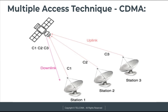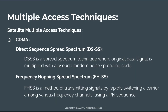This diagram shows three stations using different codes — C1, C2, and C3 — to communicate with the satellite transponder. On the downlink carrier, these codes are transmitted together at the downlink frequency. There is less chance of interference, and CDMA networks are considered very secure.